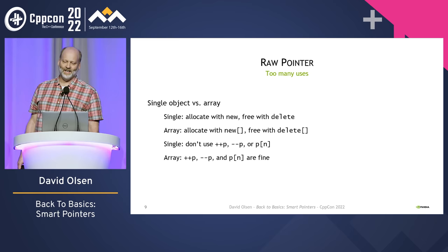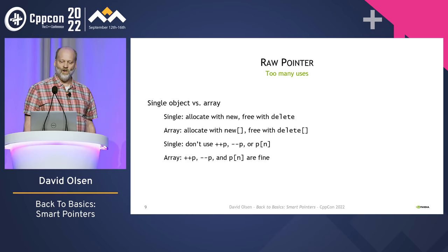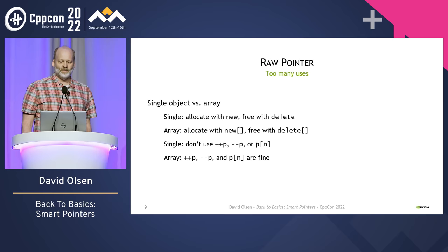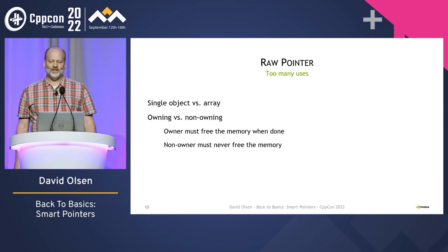If you call the single object delete when your pointer points to memory allocated with the array form of new, or vice versa, your program may crash. Also, if your pointer points to an array you can increment, decrement, and use the index operator — those operations are not usable on a pointer to a single object. Pointers to a single object and to an array have the same type; the C++ type system doesn't help you know what you can do with your pointer.